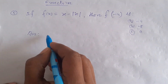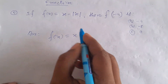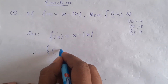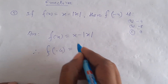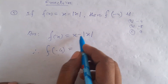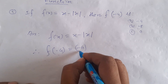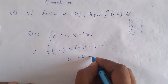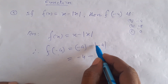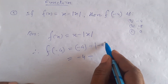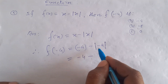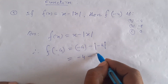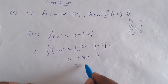Now we need to write the answer. Here we write the function of 2. We write x minus mod x. We write the function of minus 4. So we write minus 4. Now we write minus 4, and this is minus minus 4.